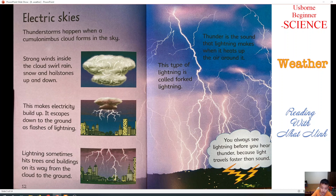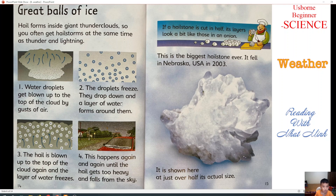Light travels faster than sound. So you always see lightning before you hear thunder. Next part, we learn about great balls of ice. Hailstorms form inside giant thunderclouds, so you often get hailstorms at the same time as thunder and lightning.